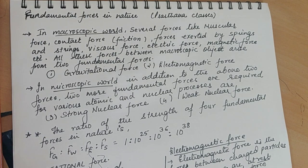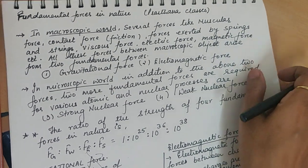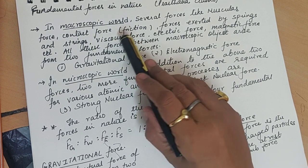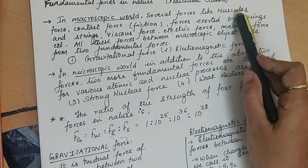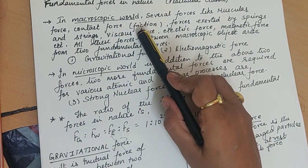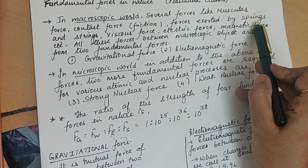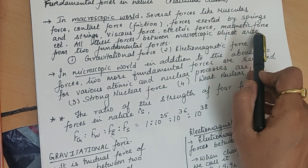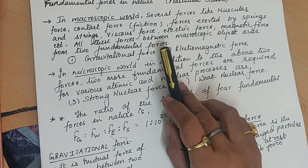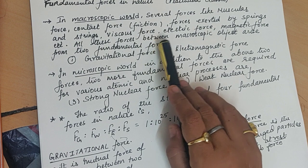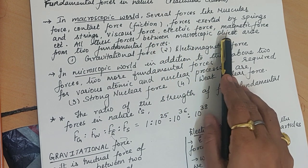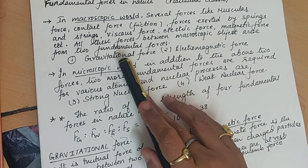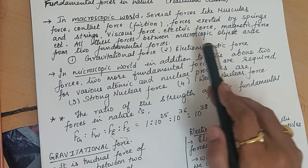Now we will cover the next topic: fundamental forces in nature, from the chapter 'Physical World.' In the macroscopic world, there are several forces — muscular forces, contact forces, friction, spring forces, viscous forces, electric forces due to charges, and magnetic forces due to motion of charges. All these forces between macroscopic objects are ultimately due to only two fundamental forces: gravitational force (involving mass) and electromagnetic force (involving charges).